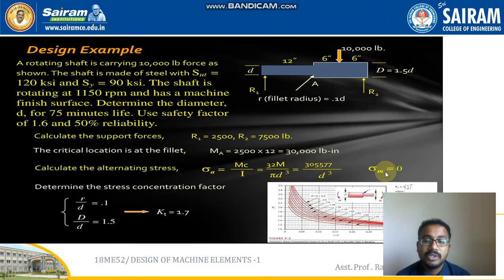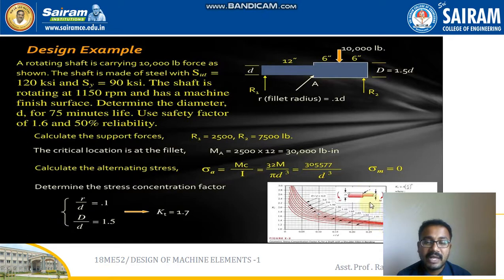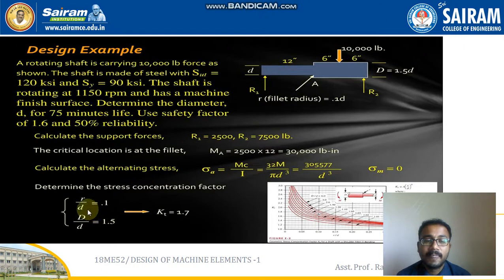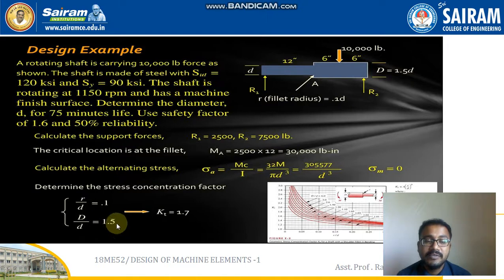The mean stress is equal to zero since this is a completely reversed stress cycle. Moving to the stress concentration factor: from the graph in the design data handbook, R/d = 0.1 (where R = D/2) and capital D / small d = 1.5. The K_tau value obtained is 1.7.